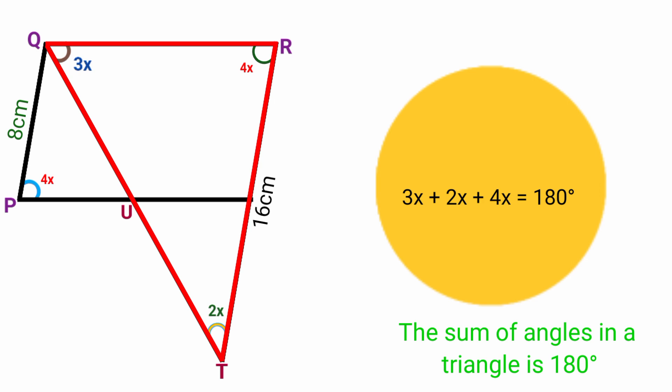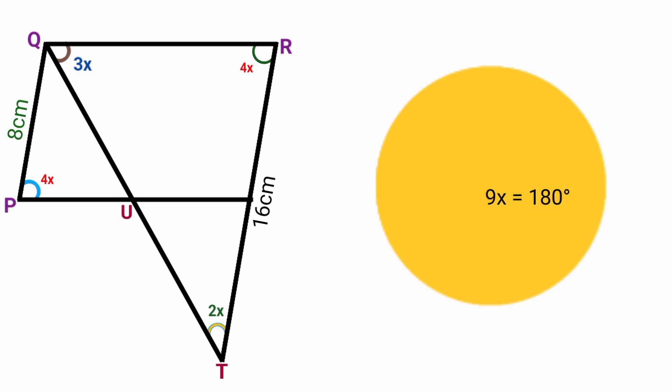3x plus 2x plus 4x equals 180 degrees because the sum of angles in a triangle equals 180. Now 3x plus 2x plus 4x is 9x, so 9x equals 180 degrees.